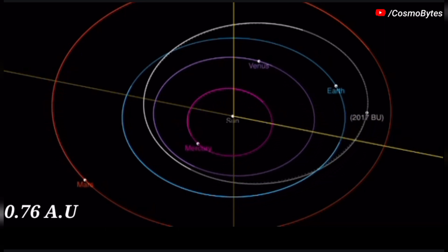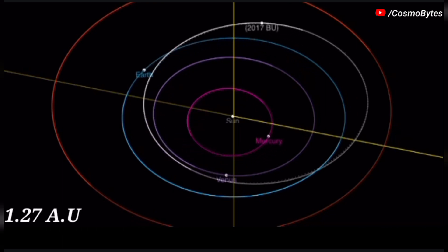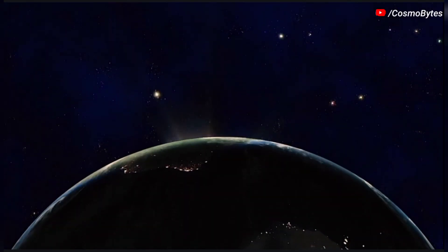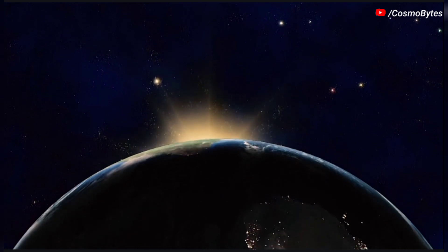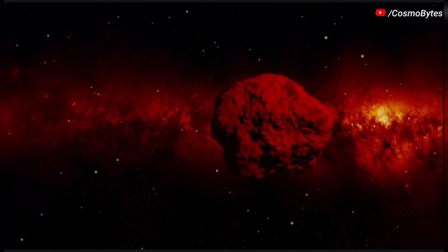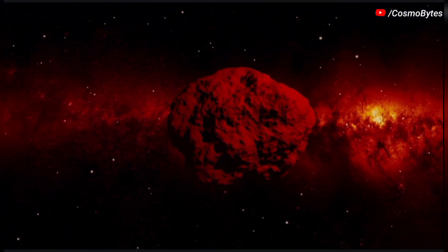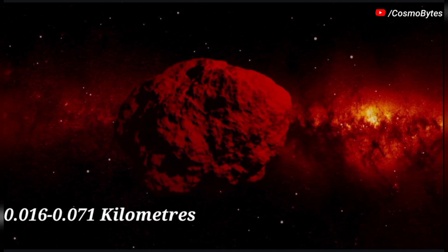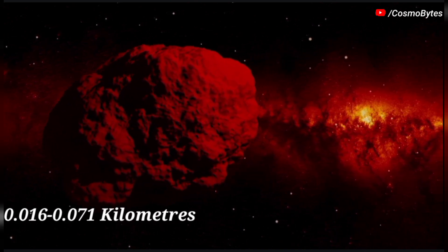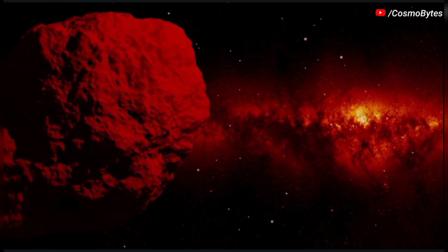It comes as close as 0.76 AU and reaches as far as 1.27 AU from the Sun. Based on its brightness and the way it reflects light, 2017 BU is probably between 0.016 to 0.071 kilometers in diameter.